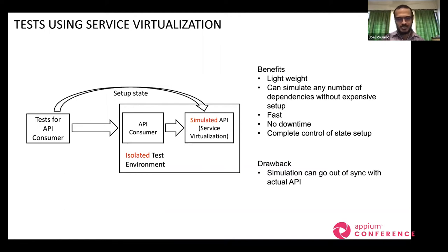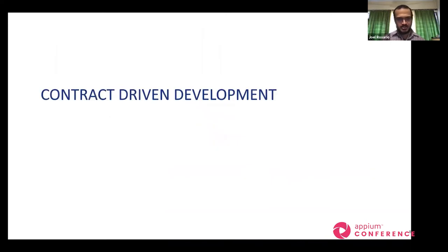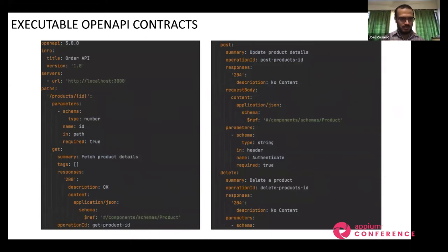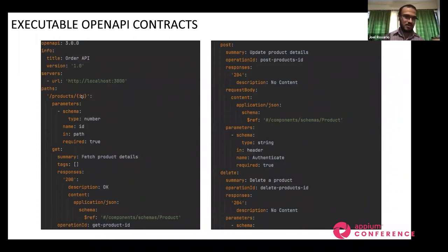To solve this, you must nail down the interaction between your simulated API and the simulation itself — this is what we call contract-driven development. Before you even start building the consumer or the API, you start with the contract. A contract contains all the details about the structure of your API. Open API is the industry standard for describing HTTP APIs and can contain rich detail — paths, JSON keys in request and response, headers, HTTP methods, and more.